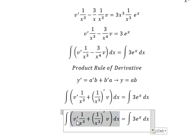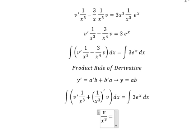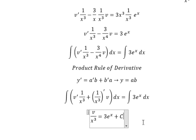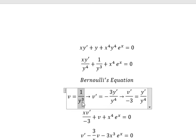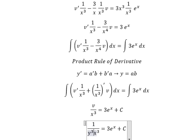So the integration of this one gives us V over X to the power of 3. This one we have 3E to the power of X, and I will put about C. About V, that is this expression. Next, I will put X to the power of 3 to the right.